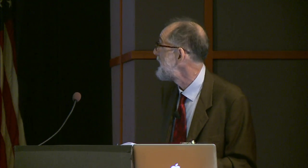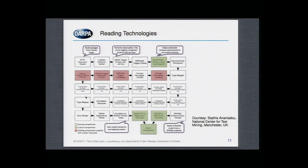What you've seen happening in the reading community is the development of many technologies for machine reading, all put into a big pipeline. We have a document reader, a sentence splitter, a part-of-speech tagger, named entity recognition, and further tagging for function words. We find overlapping annotations, do some parsing — this is from the National Centre for Text Mining in the UK. We build these huge systems that do many different kinds of processing, because reading is hard.